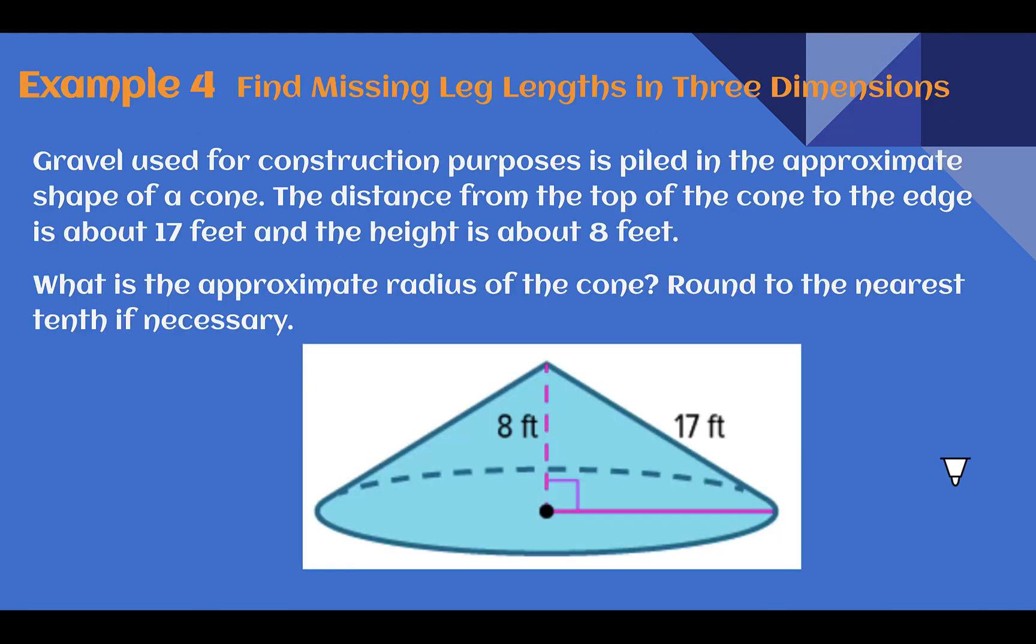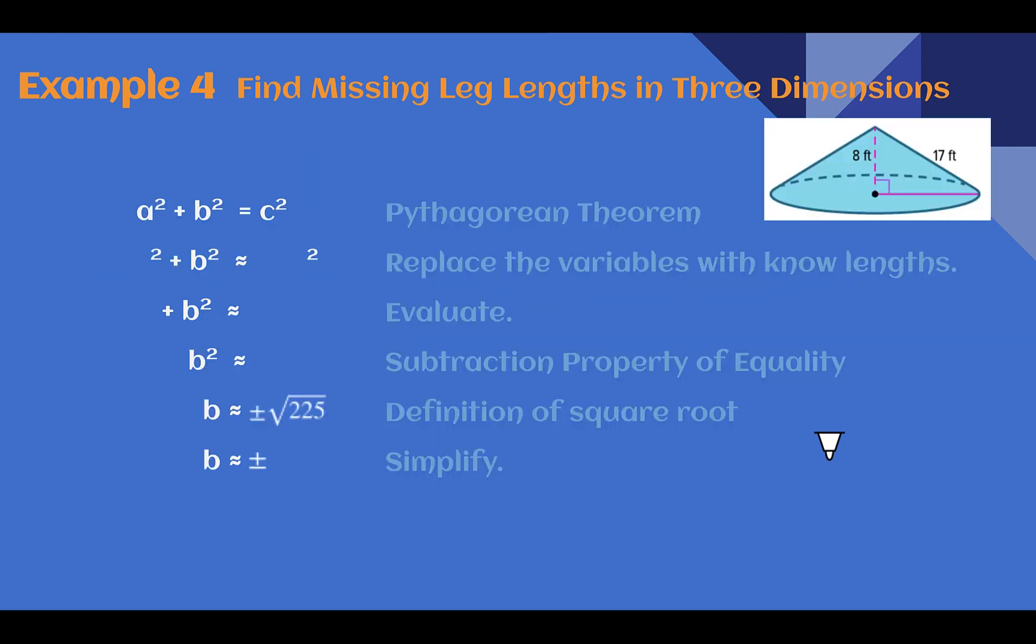Example four, find missing leg lengths in three dimensions. Gravel used for construction purposes is piled in the approximate shape of a cone, the distance from the top of the cone to the edge is about 17 feet, and the height is about 8 feet. So here's top to the edge and height. What is the approximate radius of the cone? Round to the nearest tenth, if necessary. So our Pythagorean theorem, leg squared plus leg squared equals hypotenuse squared. Plug in what we know. So we know the leg and we know a hypotenuse. We're missing our radius, our bottom leg.